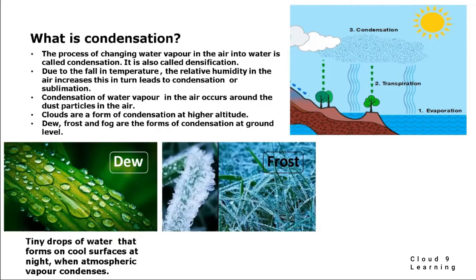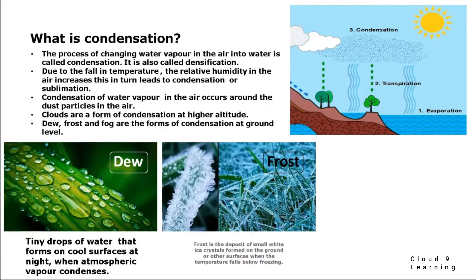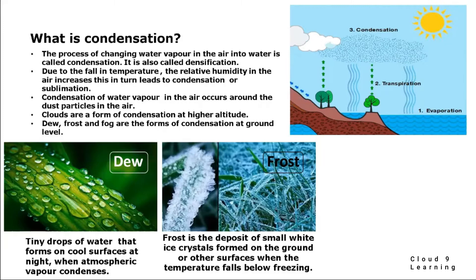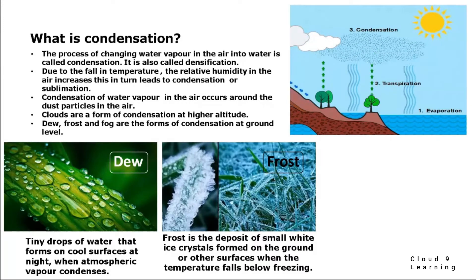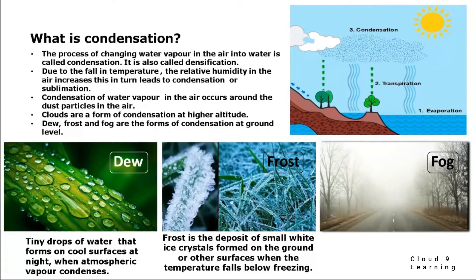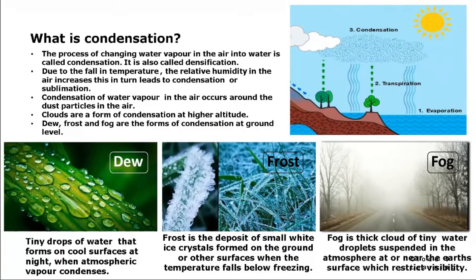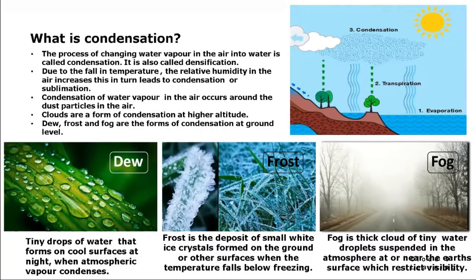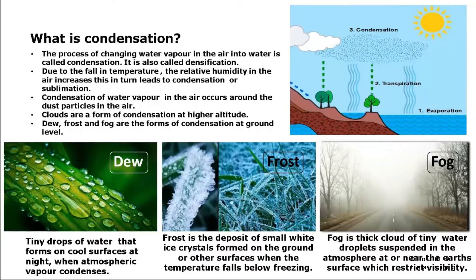The next one is frost. Frost is a deposit of small white ice crystals formed on the ground or other surfaces when the temperature falls below freezing point. The next one is fog. Fog is a thick cloud of tiny water droplets suspended in the atmosphere or near the earth's surface, which restricts visibility.